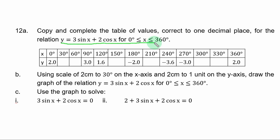Part b of the question. Using scale of 2 centimeters to 30 degrees on the s axis and 2 centimeters to 1 unit on the y axis, draw the graph of the relation y equal to 3 sin s plus 2 cos s over the given range of s values. Part c, use the graph to solve 3 sin s plus 2 cos s equal to 0.